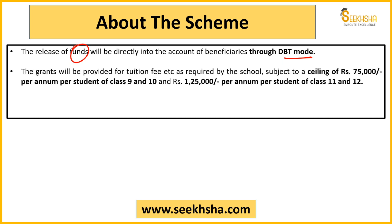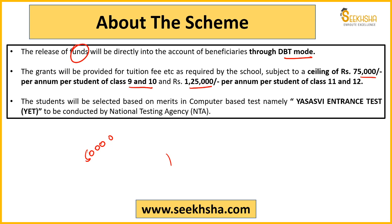Funds released under this scheme will go through Direct Benefit Transfer directly into the beneficiary's account. Regarding the grant amount, the financial support will be as per the school's fees, but upper limits apply. For Class 9 and 10, the annual upper limit is ₹75,000 — whichever is lower: fees or ₹75,000. If fees are ₹50,000, only ₹50,000 is transferred; if fees are ₹1 lakh, still only ₹75,000. For Class 11 and 12, the upper limit is ₹1,25,000.